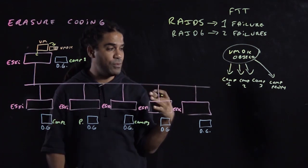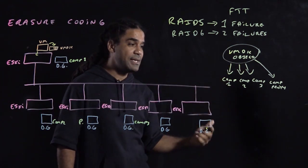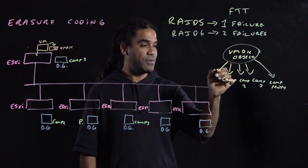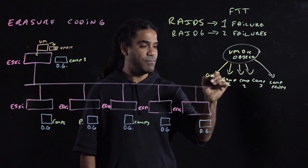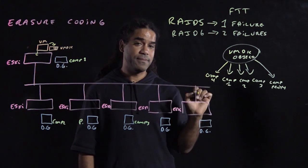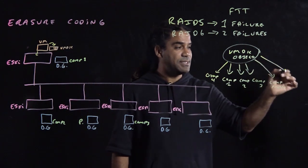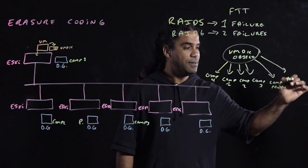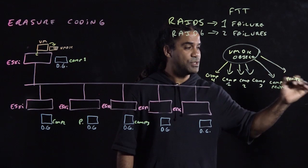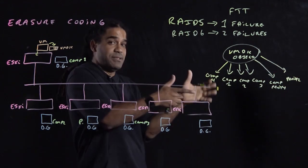And automatically vSAN will go ahead and say, well, now I need another component, another data component, component 4. And I need a second parity, parity 2. vSAN decides we need that.